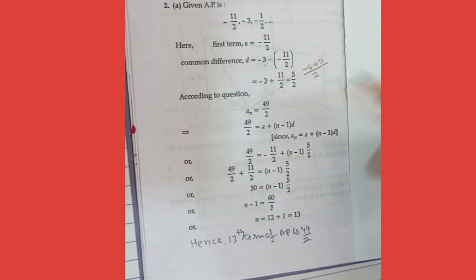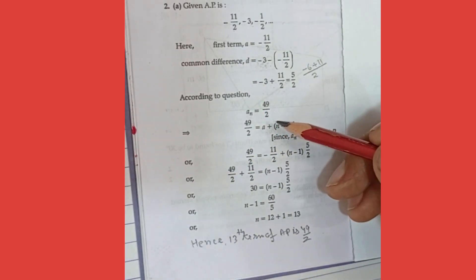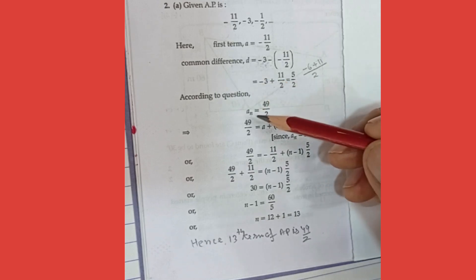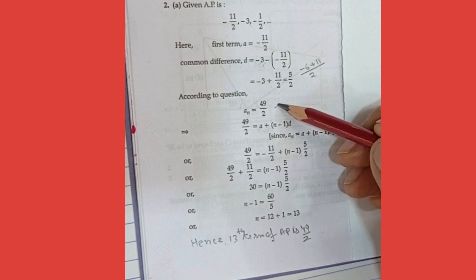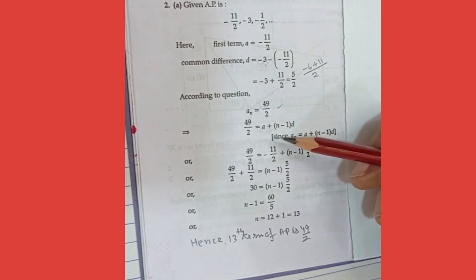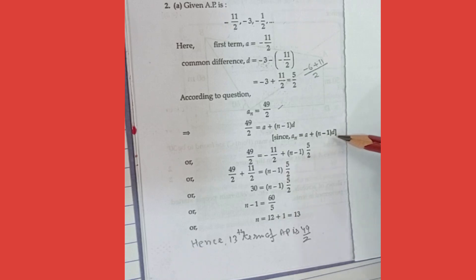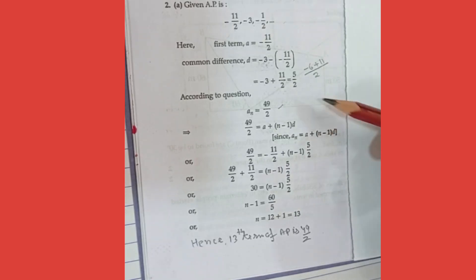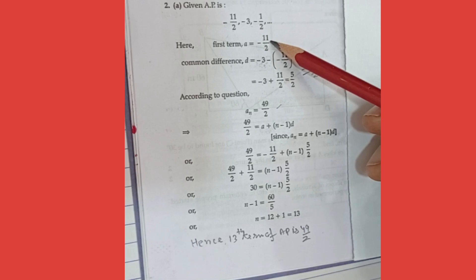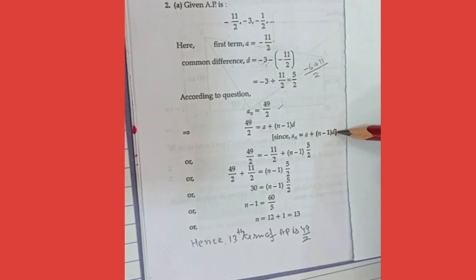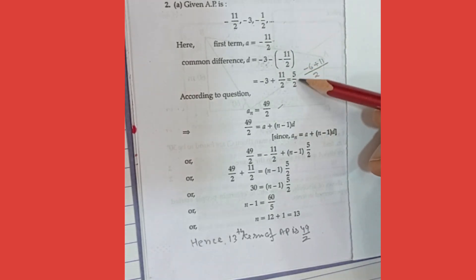Now you are given that you have to find out that number 49 upon 2 is which term. So we will let that AN is that number, AN is equal to 49 upon 2. Now what is the formula for AN? AN is equal to A plus N minus 1 into D.